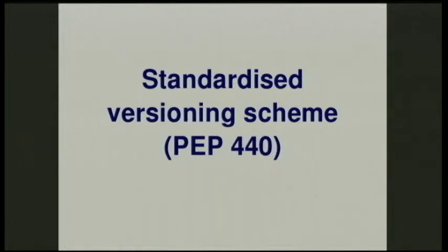Another much more recent change is that we finally have a standardized versioning scheme. The original setup tools versioning scheme was derived from the Perl one for CPAN — it was very happy to guess. It would take any arbitrary string you threw at it and try to come up with an ordering. It would never say it didn't understand the relative order. In standard cases it gave sensible answers, but in edge cases it would do very strange things, seemingly picking versions at random from a user's perspective.